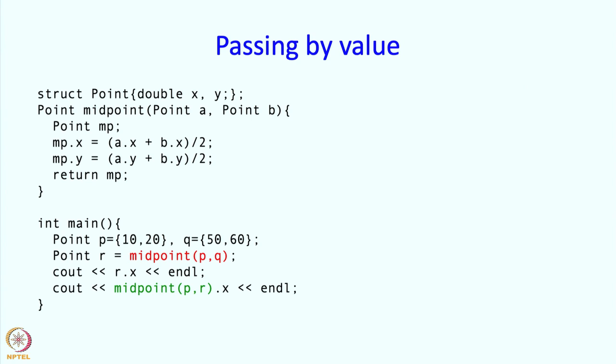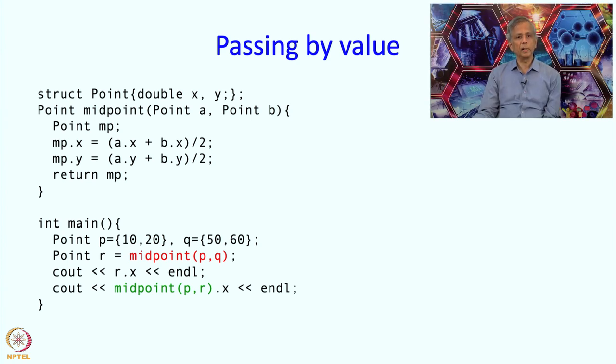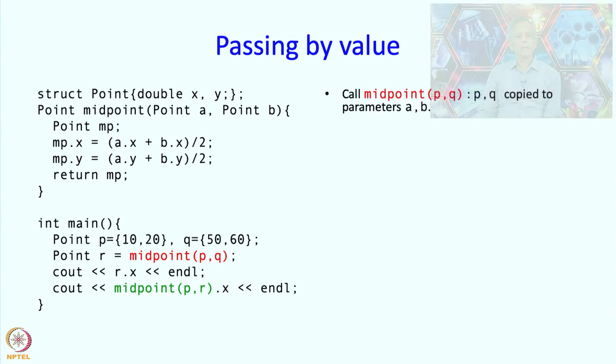First an example of passing by value. Here is a structure point, the one that we saw earlier. It has members x and y both double. Now here is a function called midpoint. It takes as arguments a and b which are both points. It creates a new point mp and returns that. We will see exactly what happens. And then there is the main program and the main program is going to call this function midpoint. The first call, the red call, suppose we start executing main and come to the red call. What happens?